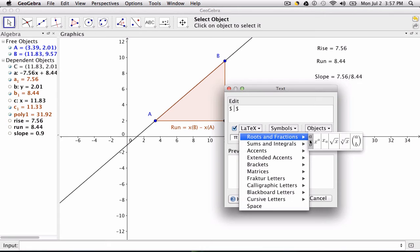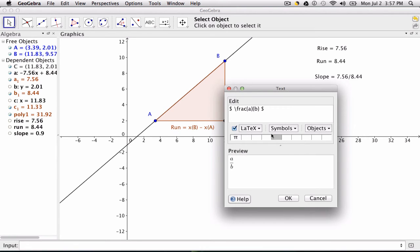So under roots and fractions, I click my first one, A over B. And it shows you this: slash, frac, A and B. And it gives you a preview down here.